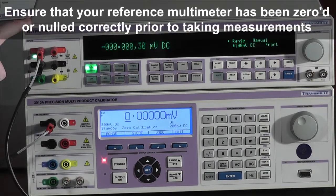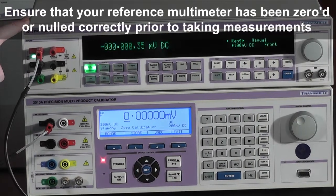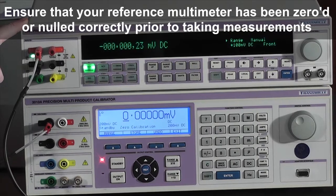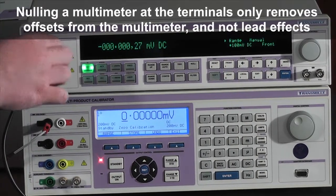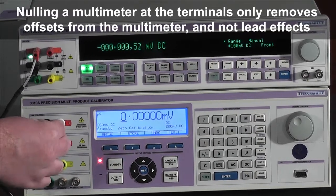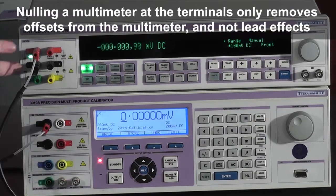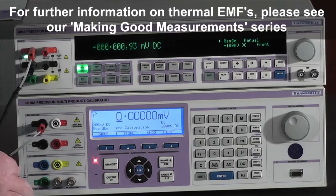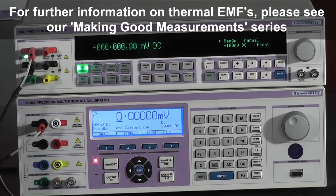Ensure that your multimeter is correctly zeroed before proceeding with any further steps. To zero the multimeter correctly, make sure the leads are shorted at the end that's closest to the calibrator, as shorting up here will not remove any EMF effects of your leads.